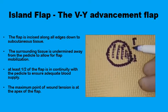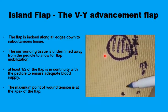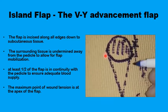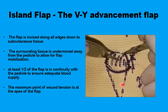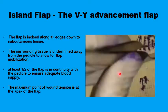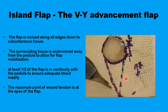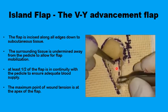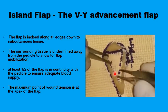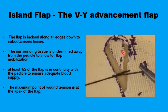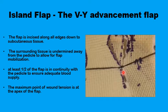Another advancement flap is the V-Y or island flap. If you have a defect of diameter X, you mark a triangular flap with a leading edge of X and a length of 1.5 to 2 X's. The lesion is removed, and the completely separated piece of skin — detached from all its surroundings — is advanced into the defect, pedicled only on its subcutaneous attachment, which provides the blood supply. The leading edge is sutured in place and then a suture is placed at the apex of the flap, where most of the tension is.